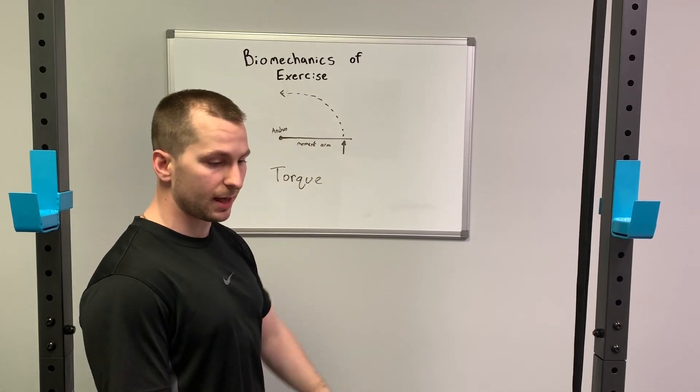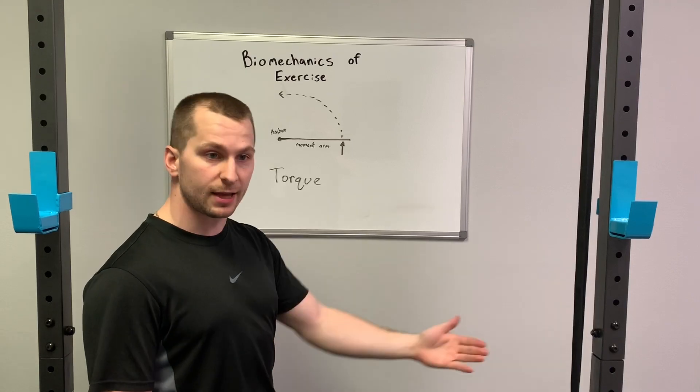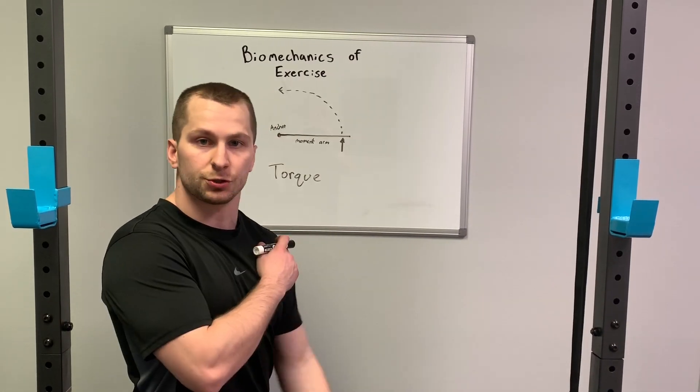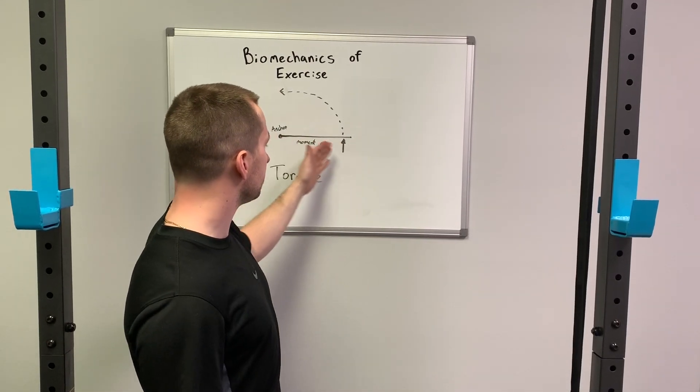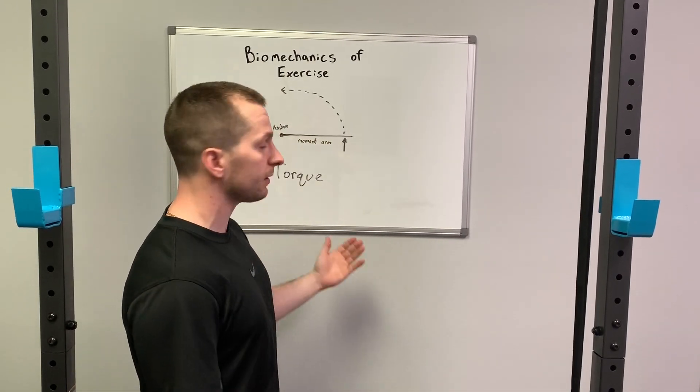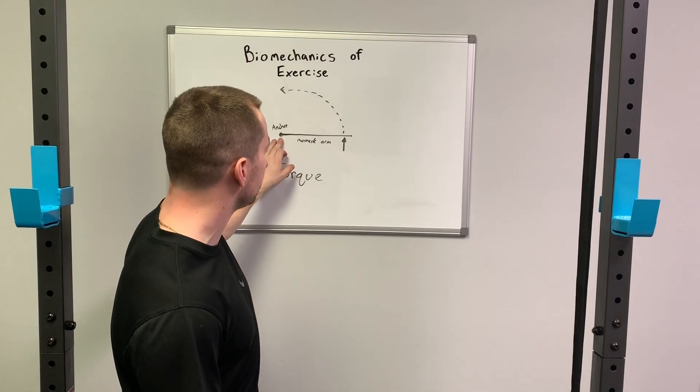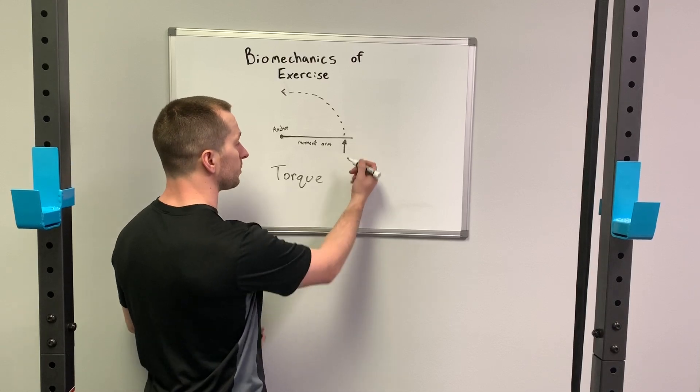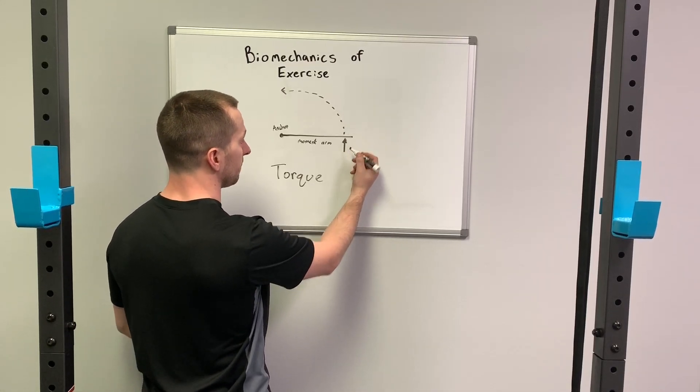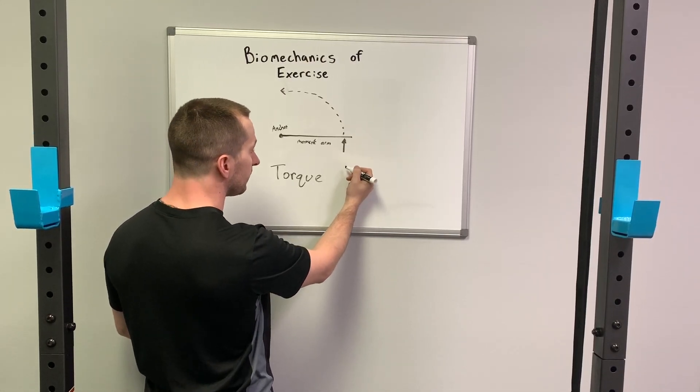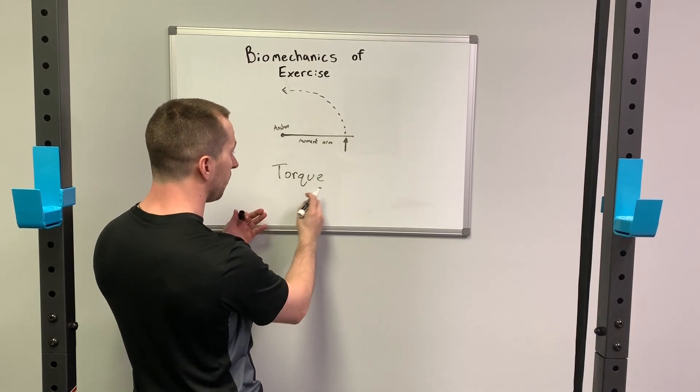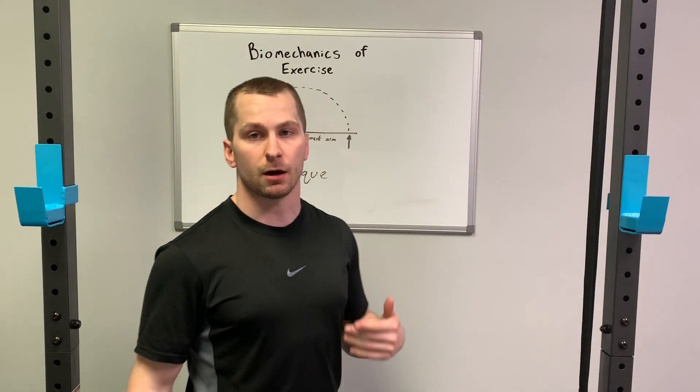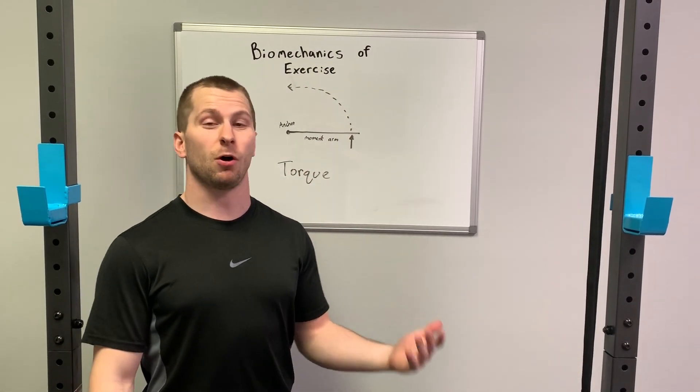A good example would be our shoulder. If we're using this diagram here, the anchor, which is the point that the lever is going to attach to wherever it's rotating around, would be like the joint of the shoulder. The moment arm or the lever is the length from the center, the axis of rotation, to the point where the force is being applied. In this situation we're talking about the shoulder, the point where this force is being applied would be where the muscle or the tendon is attaching to the bone, and that's pulling on the bone to rotate throughout the joint.